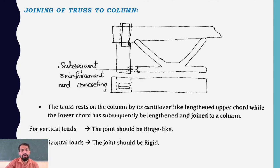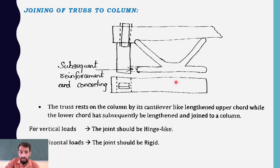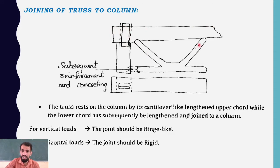This is the joining of a truss to the column. Some trusses are also used to join, and subsequent reinforcement and concreting is done. This is the column and this is the truss. From the top view, this is the column section where it is embedded inside the beam-type truss, and this is the truss coming in.